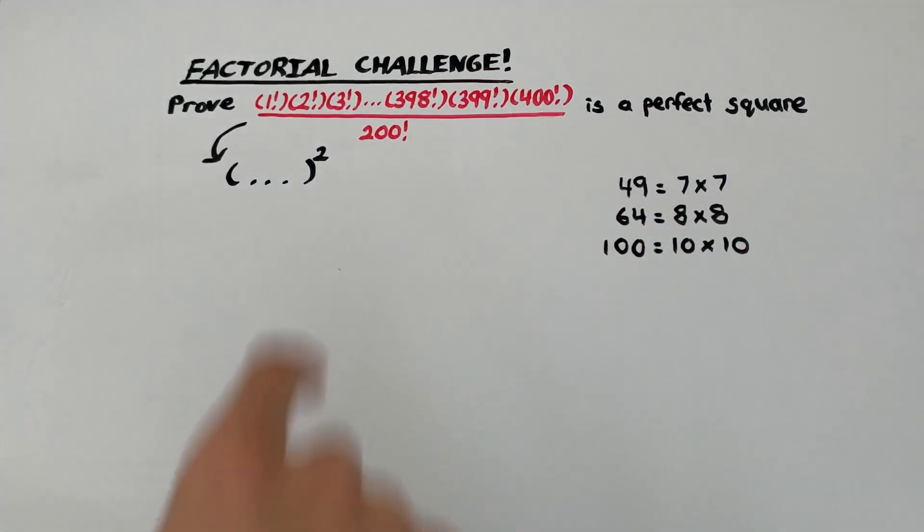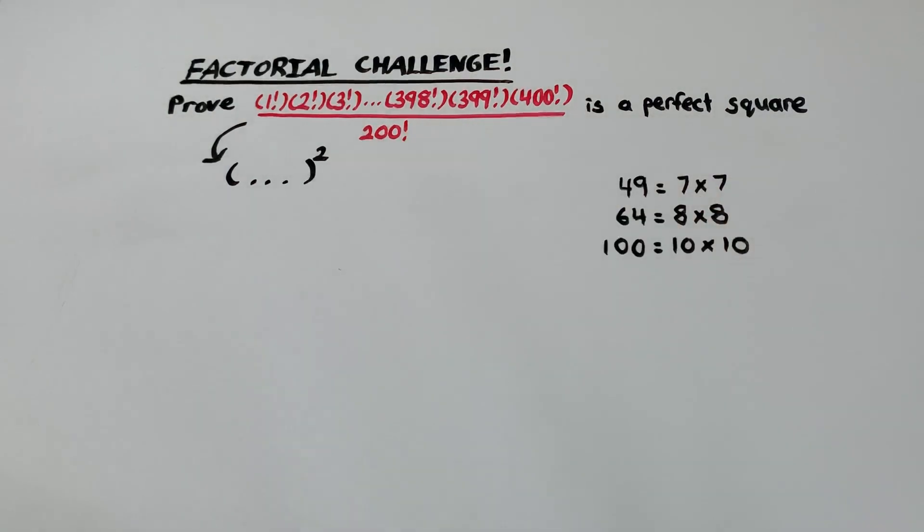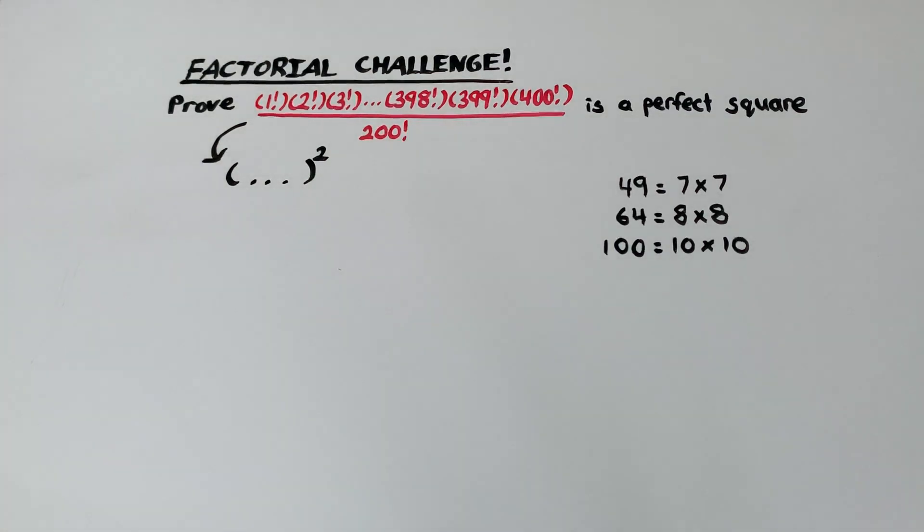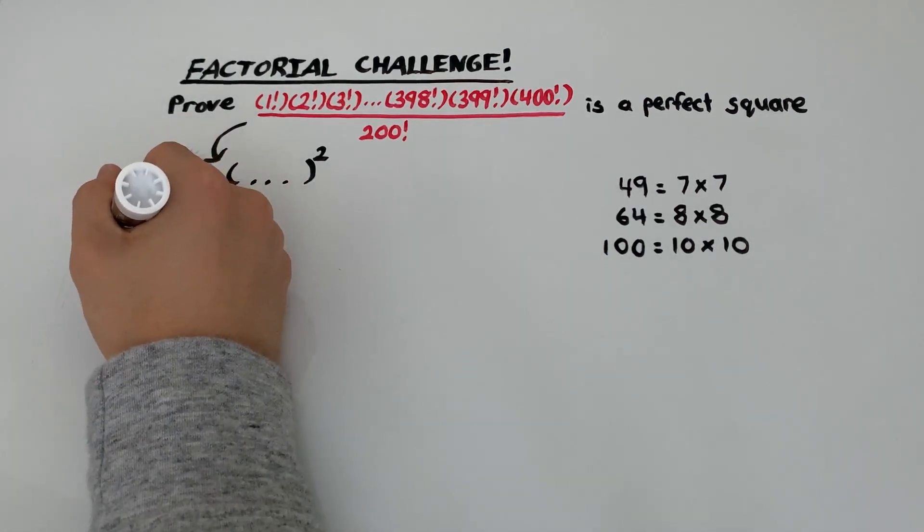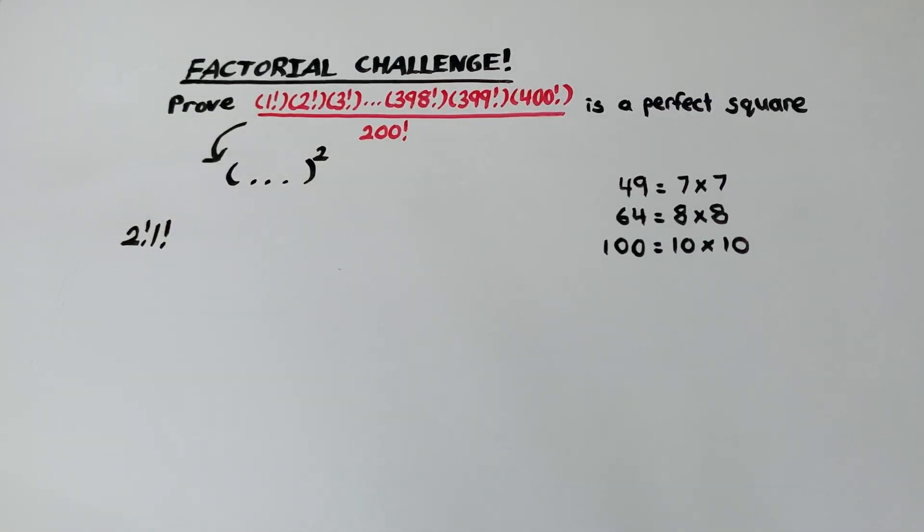So we're going to focus on the top part of this fraction because it's a lot more complicated than the bottom part. Now let's take some inspiration from what we did over here and pair up the terms at the top in a clever way. Let's take a look at what happens when we pair up 2 factorial and 1 factorial. Now if you saw the video where we were evaluating and manipulating factorials, we learned one common problem-solving technique for factorials in that video.